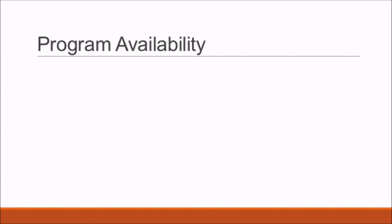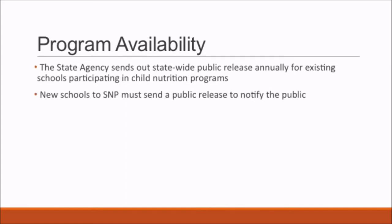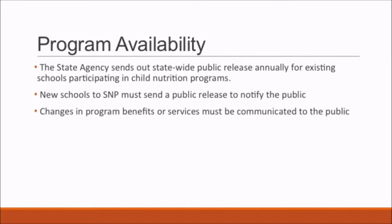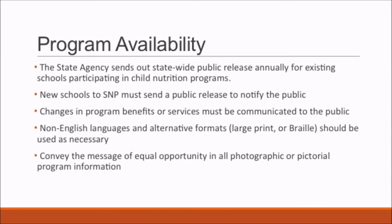Program Availability. Annually, programs must notify the public of participation in the school nutrition programs. The state agency sends out a statewide public release annually for existing schools participating in child nutrition programs. New schools must send a public release, and changes in program benefits or services must also be communicated. Information should be offered in non-English languages and alternative formats such as large print or braille as necessary.